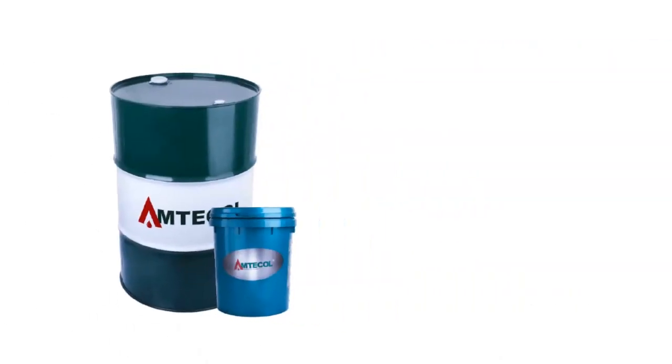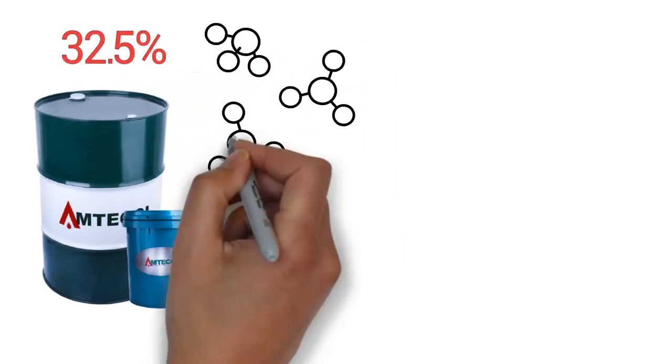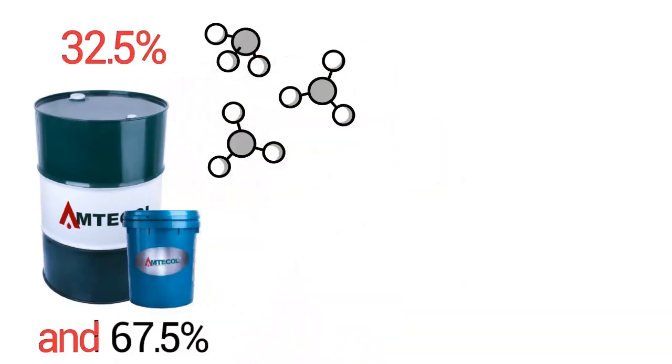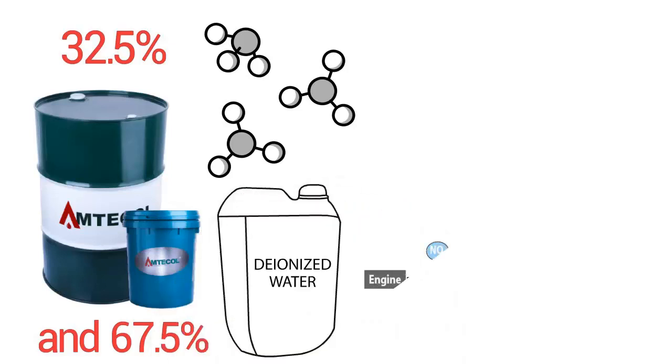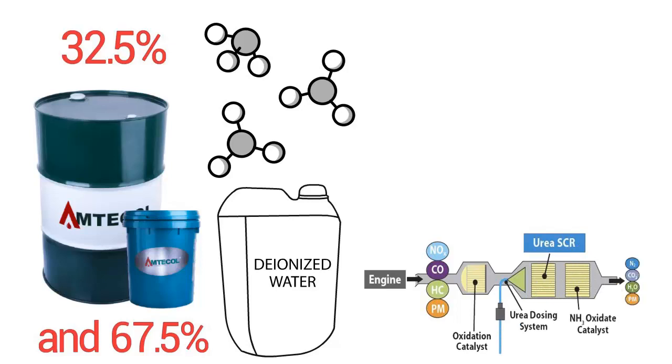Diesel exhaust fluid is manufactured with 32.5% high-purity urea and 67.5% pure deionized water for use in selective catalytic reduction, SCR, emission control systems in diesel-powered vehicles.